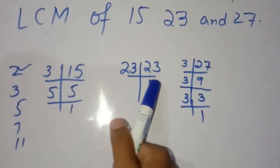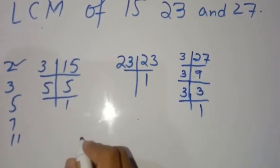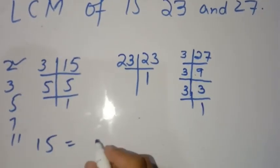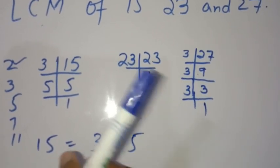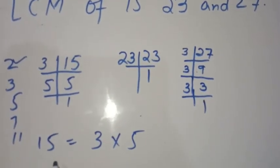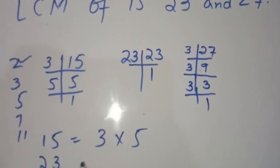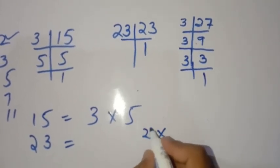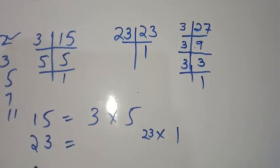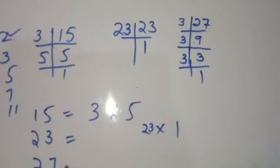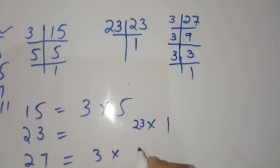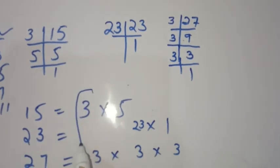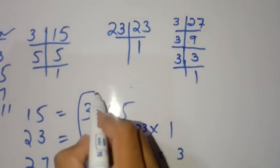We now write the prime factorizations: 15 is equal to 3 × 5. Then the prime factorization of 23 is just 23. And 27 is equal to 3 × 3 × 3.